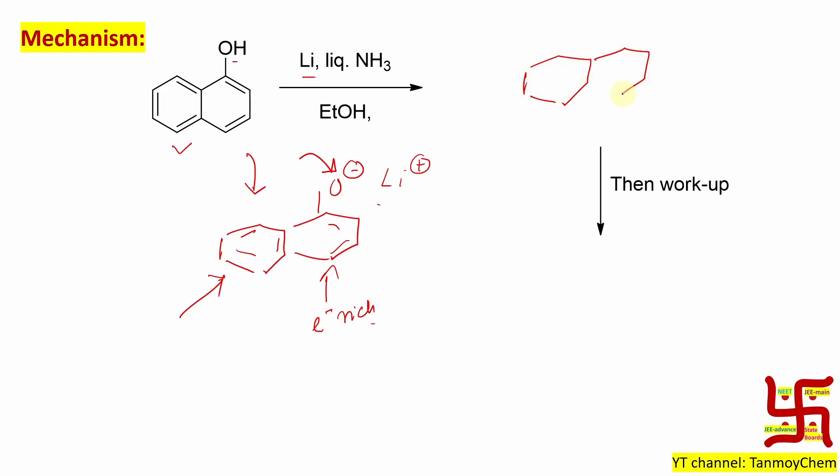Remember this Birch reduction happens on 1,4 fashion. So previously there was one hydrogen here, one here, one here, and one here. Now after reduction, one more hydrogen - hydrogen addition is reduction, I told some time before. So this is the product after the reaction. Now if you do the workup, this part will be protonated and we will end up with this molecule.